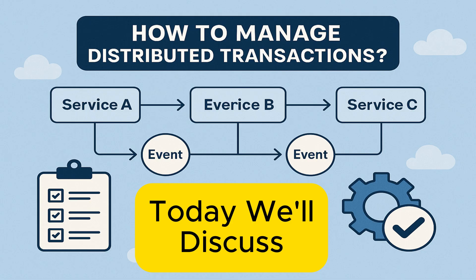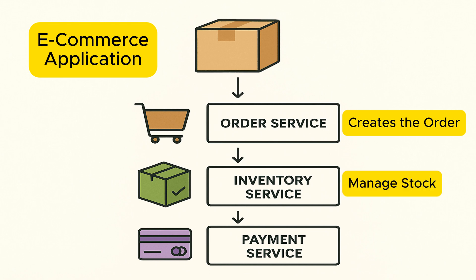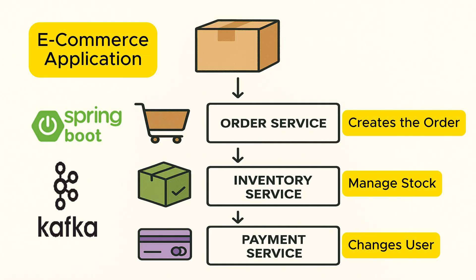Before we explain what the Saga design pattern is, let's first understand how things work without it, using a traditional synchronous approach. Let's say we have a typical e-commerce flow with three services: an order service that creates the order, an inventory service that reserves the stock, and a payment service that charges the customer. We'll also see an implementation of all these services using Spring Boot and Kafka in the next part.